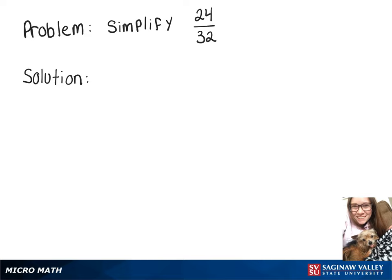We want to simplify 24 over 32, and we're going to do that by factoring the top and factoring the bottom, hoping to get a common factor between the two.